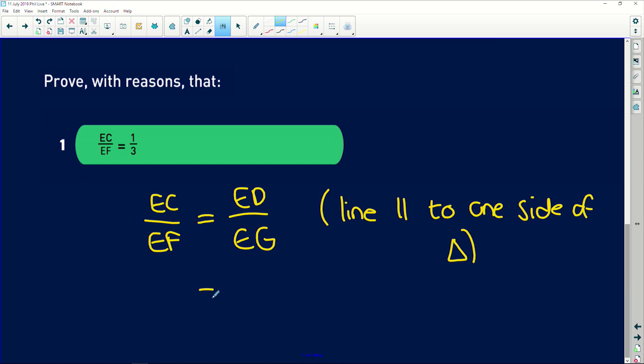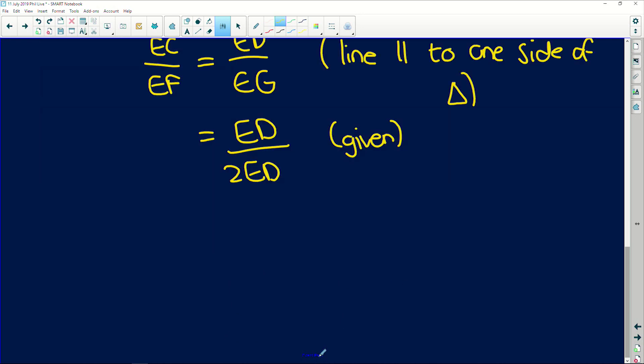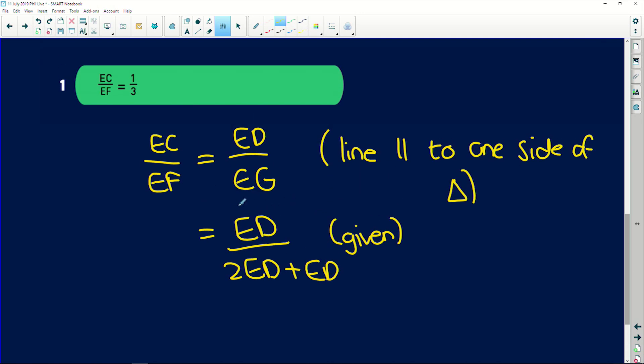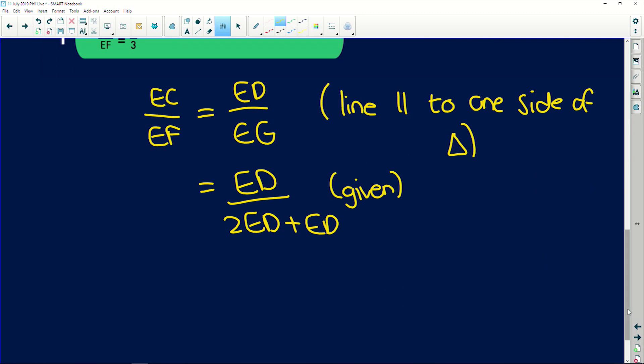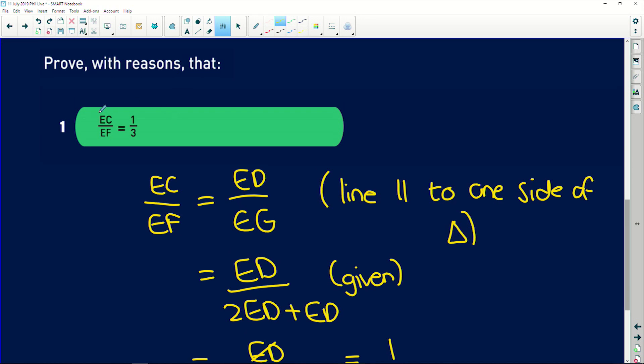And we know that EG is 2ED. It was given to us. Well, 2ED plus ED. Because remember, we're looking at line EG. So if we look up here, we've got EG, this whole line here. And DG was given to us as 2ED. So we've got 1ED plus 2ED, which gives us the line EG, which is the same as saying ED over 3ED. Obviously, the EDs will divide into each other, which equals 1 over 3. Easy peasy. Proportion question.